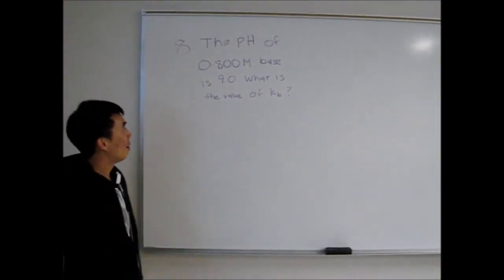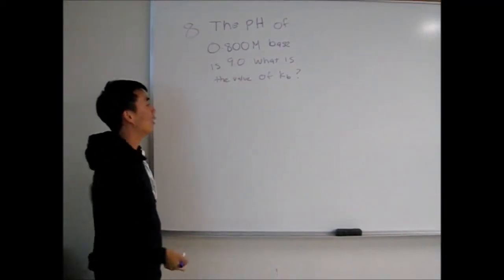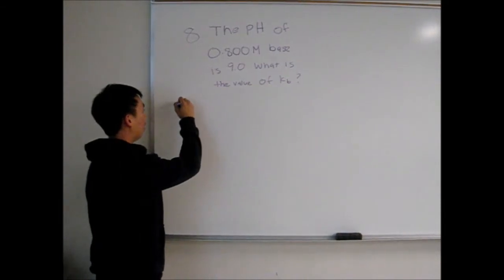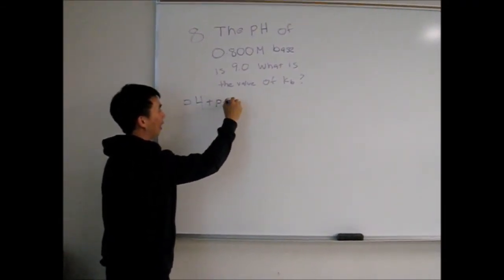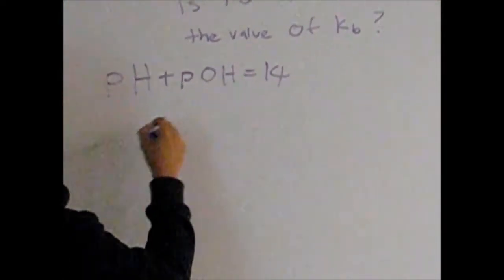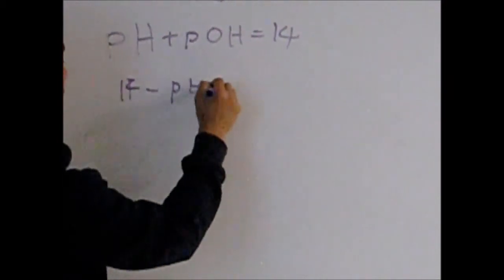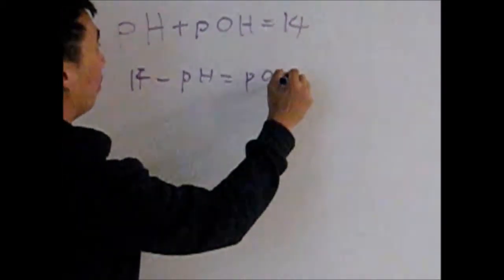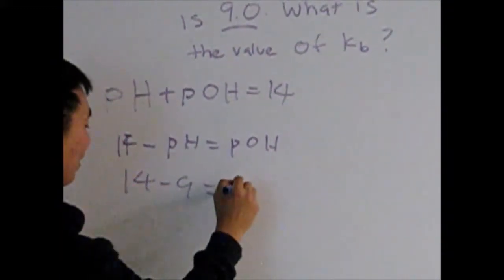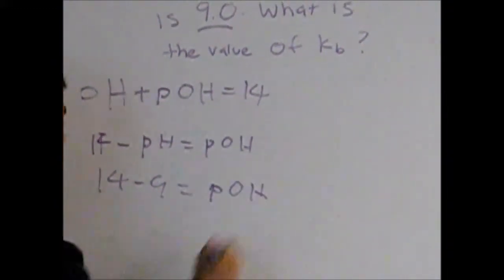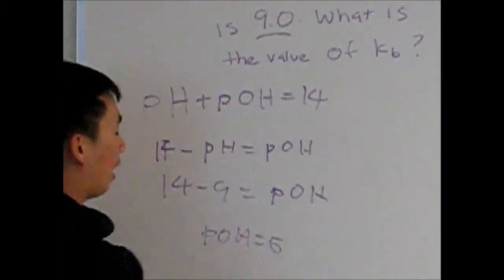Because pH is 9 and kb is usually related to pOH, we want to find the pOH. To find pOH we do pH plus pOH equals 14. Next, we isolate it: 14 minus pH equals pOH. We just plug in the numbers: 14 minus 9 equals pOH, and that will result in pOH equal 5.